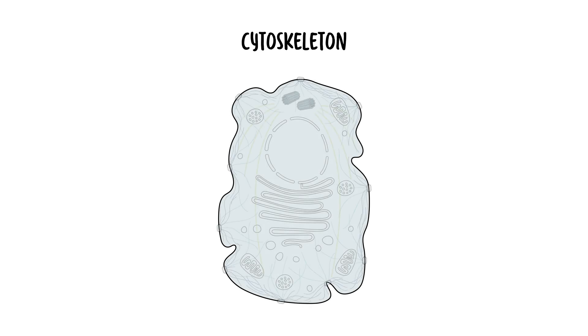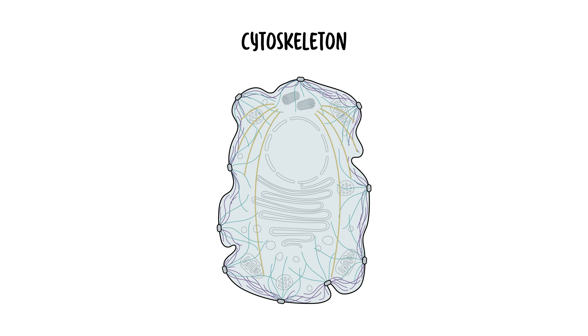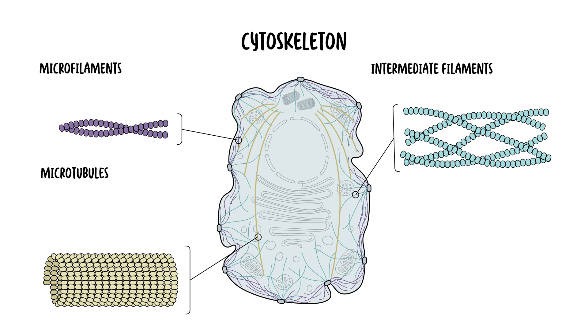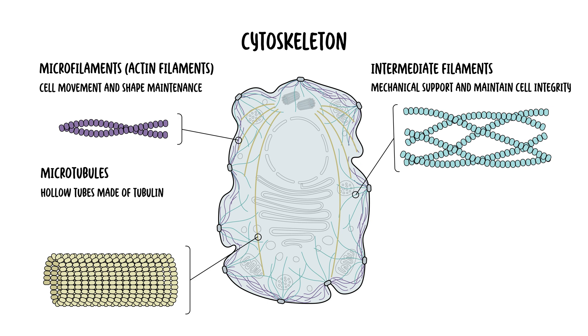Now, another very important organelle or structure within the cell is the cytoskeleton. The cytoskeleton, as the name suggests, is the skeleton of the cell. The cytoskeleton is composed of three main types of protein filaments: the microfilament, intermediate filament, and microtubule. The microfilaments are thin filaments, made up of actin, involved in cell movement and shape maintenance. The intermediate filaments provide mechanical support and maintain cell integrity. The microtubules are hollow tubes, made up of tubulin, involved in maintaining cell shape, intracellular transport, and in cell division.